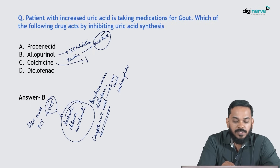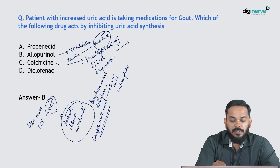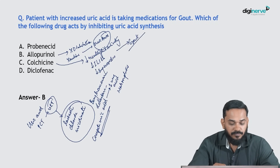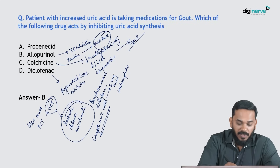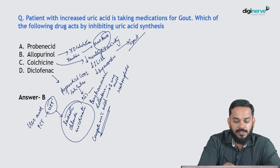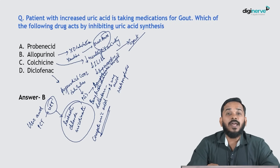Colchicine is an anti-inflammatory agent; it reduces neutrophil activity, reduces interleukin-1 and interleukin-6, and reduces superoxides, thereby improving symptoms of gout. Diclofenac is a preferential COX-2 inhibitor that reduces prostaglandin formation, providing symptomatic benefit. So the confirmed answer is allopurinol, the xanthine oxidase inhibitor.